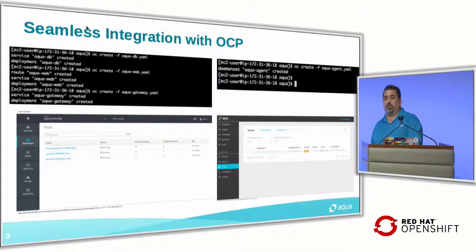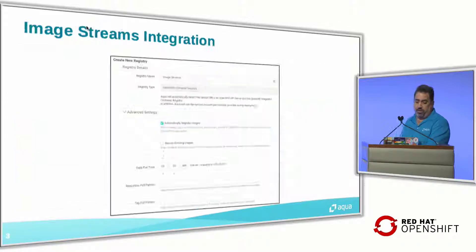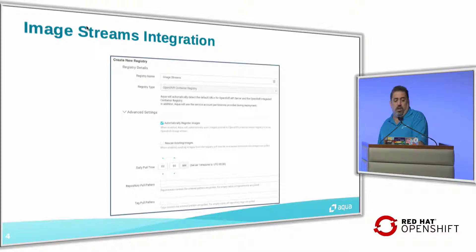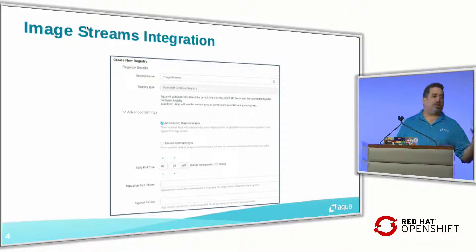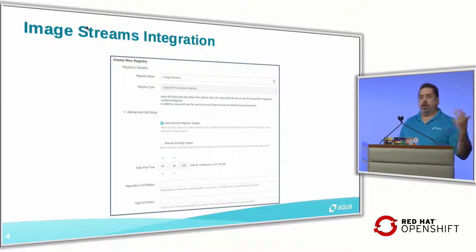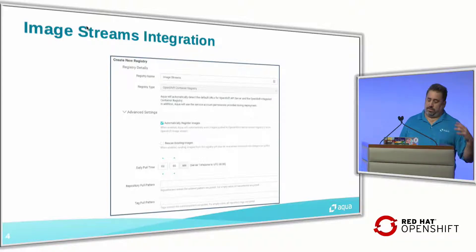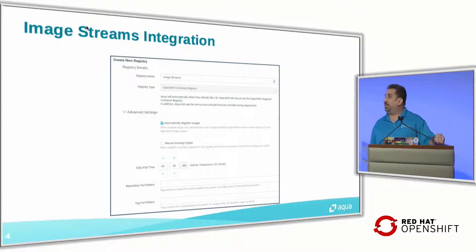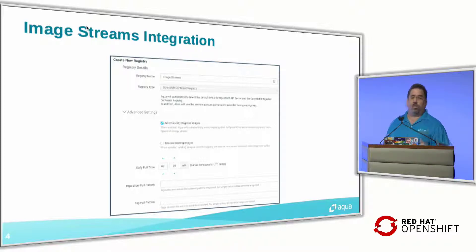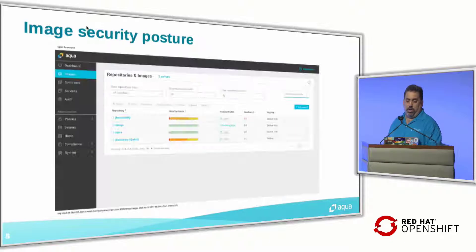Automatically in about 10 minutes you have everything running and configured. We have the ability to integrate with the image streams of OpenShift, so we are able to scan images from the OpenShift registry. We also have the ability to search images if you're looking to see exactly what images exist, and you can schedule scanning and more.